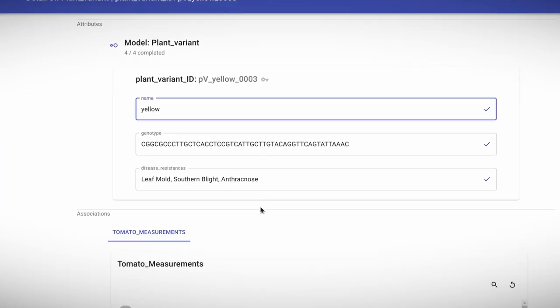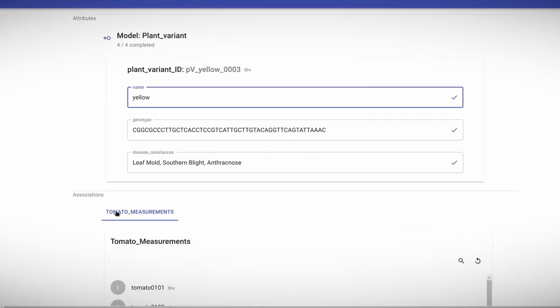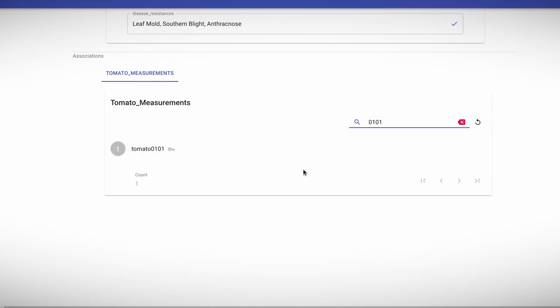In the detail view you can inspect a single data record, see the values of its attributes and most importantly see all its associations, through which you can also search and paginate.